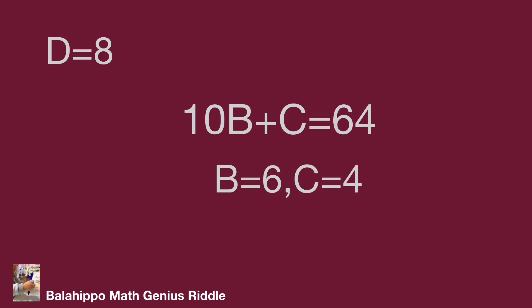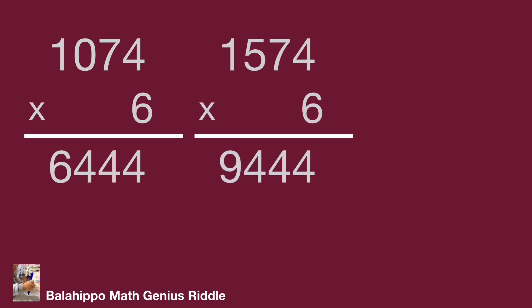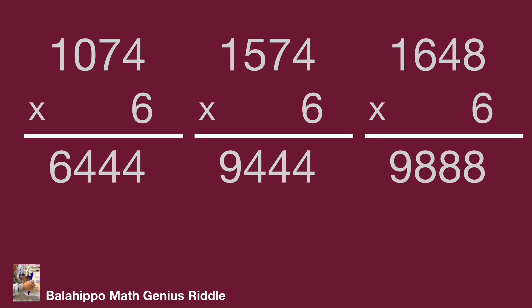Let's check the final results. We get 1074 × 6 = 6444, and 1574 × 6 = 9444, and 1648 × 6 = 9888. That's all the answers we get. Do you find it? Hope you enjoy the video. Thank you. Don't forget to watch the video.